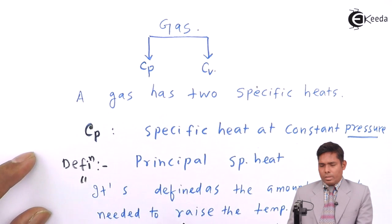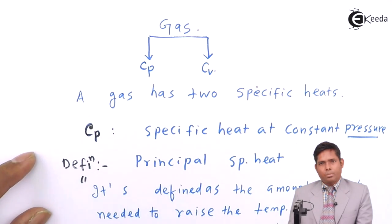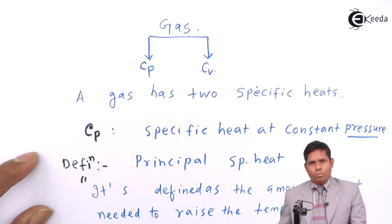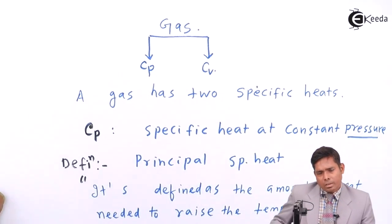In the same way we can define Cv. Cv is the amount of heat required to raise the temperature of the unit mass of the gas by one degree centigrade at constant volume. The definition is nearly the same — principle specific heat of gas at constant pressure and at constant volume.